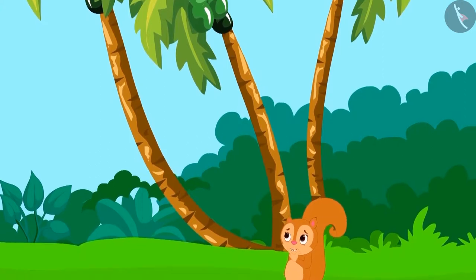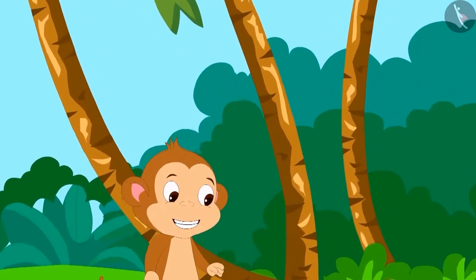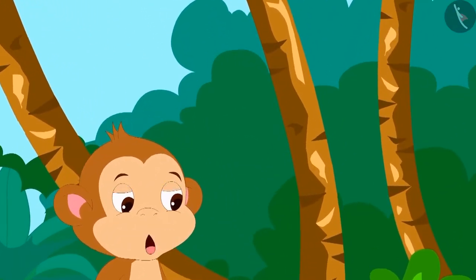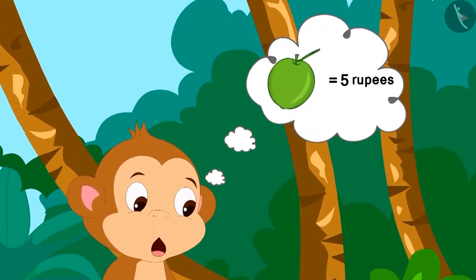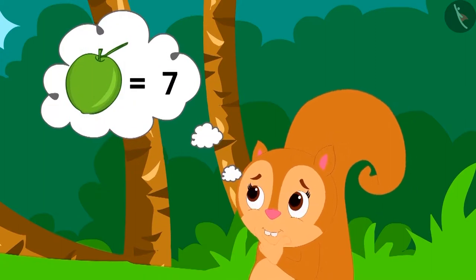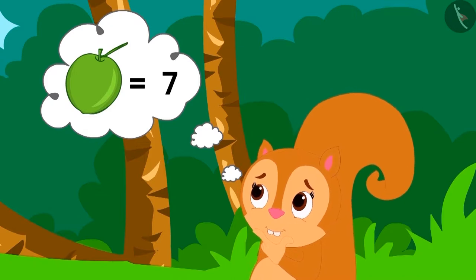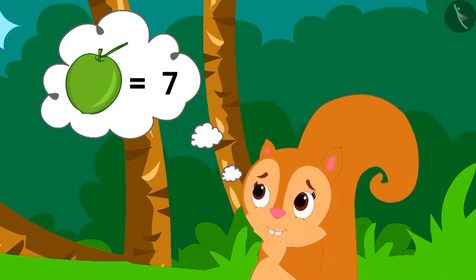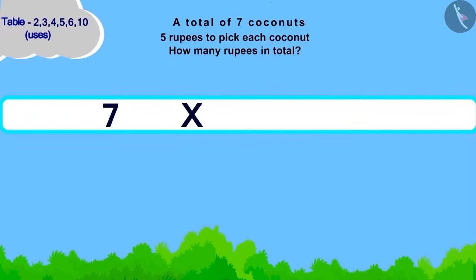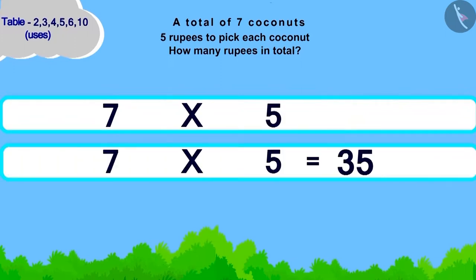Now Chanda had to pick coconuts from a coconut tree, but the tree was very high. So she called Babban for help. Babban told Chanda that he would take five rupees for picking each coconut. Chanda had to get a total of seven coconuts picked. Now Chanda is thinking — how much money will she have to pay to Babban? Children, can you solve this?